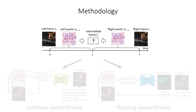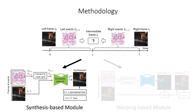Our method first splits events between subsequent keyframes into two chunks according to the desired interpolation timestamp tau. These data primitives are then passed to two separate modules. In the synthesis-based module, event chunks and keyframes are fused to the interpolated frame in an end-to-end fashion. This module allows our method to cope with brightness changes, since it can directly integrate events.